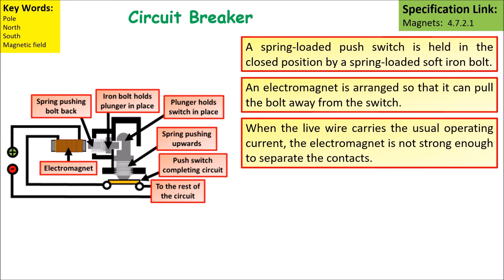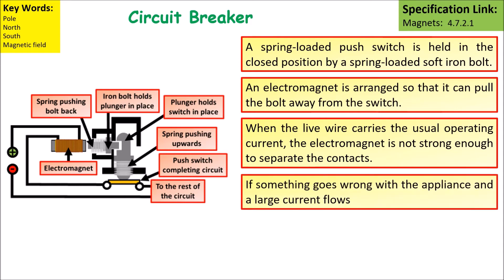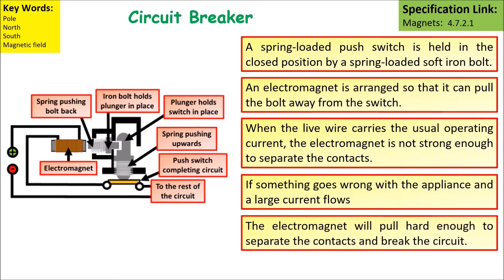When the live wire carries the usual operating current, the electromagnet is not strong enough to separate the contacts. If something goes wrong however, then a large current will flow. The electromagnet will be strong enough to pull out that spring loaded bolt. The bolt will spring up and break the circuit.